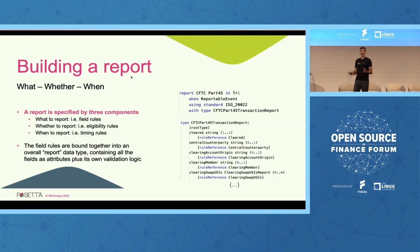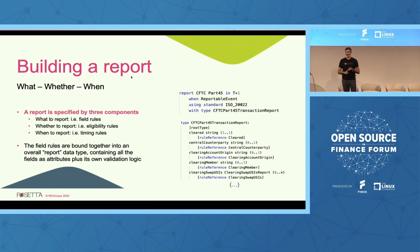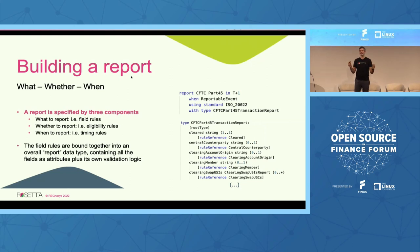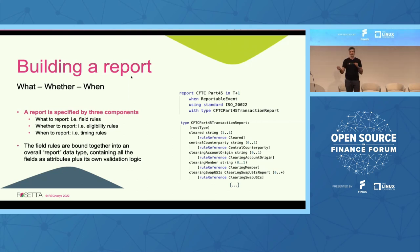To build an entire report like the CFTC rewrite, there are three components: what, whether, when. 'What' is what to report — all the reportable fields — captured by field rules. 'Whether' is eligibility rules: should I report this trade for this specific region? 'When' is timing rules. The field rules are bound together into an overall report data type — in this case, the CFTC report data type — which contains all fields as attributes plus its own validation logic: whether fields are optional or mandatory, cardinality, conditions linking attributes, field types, and so on.